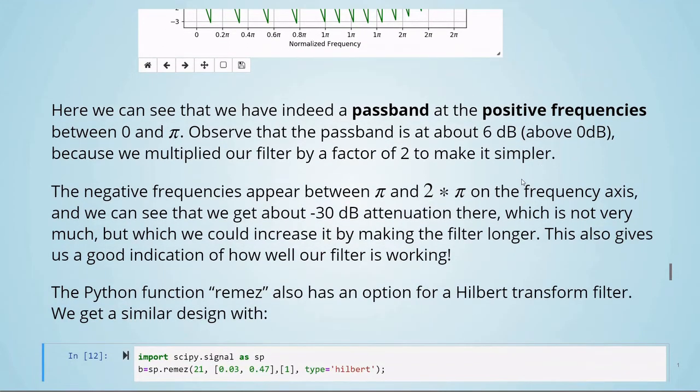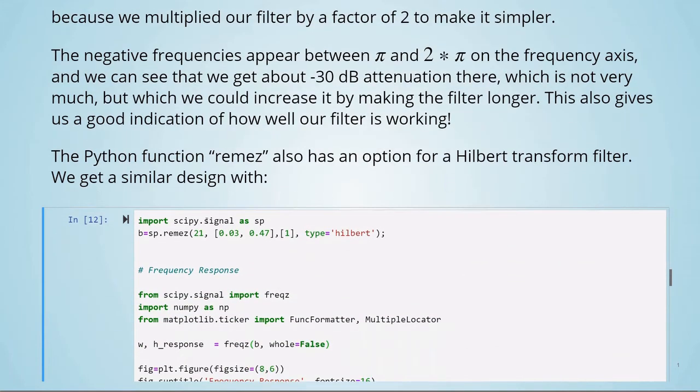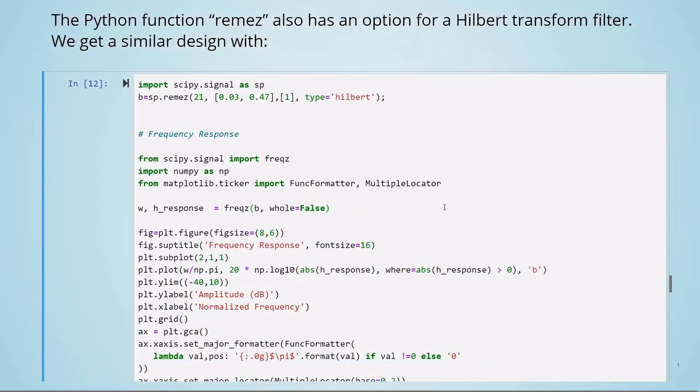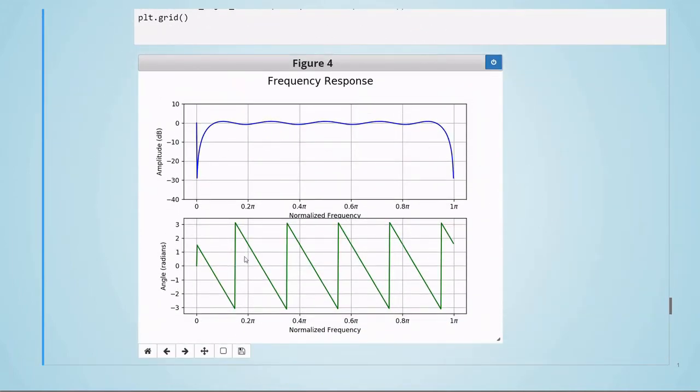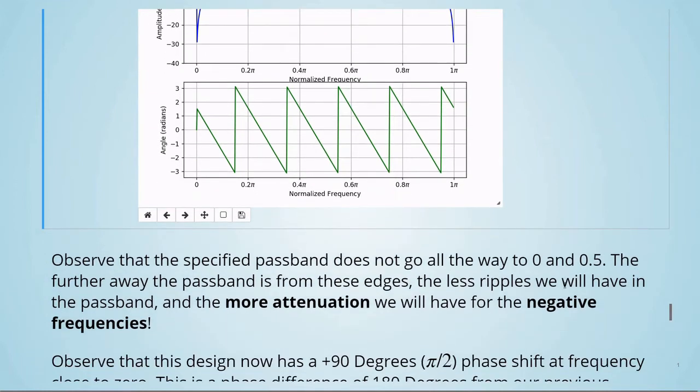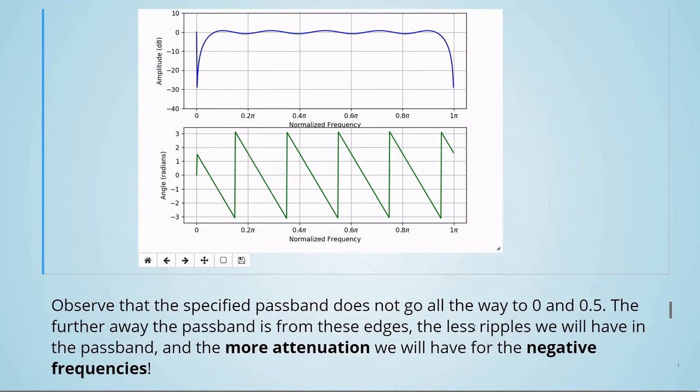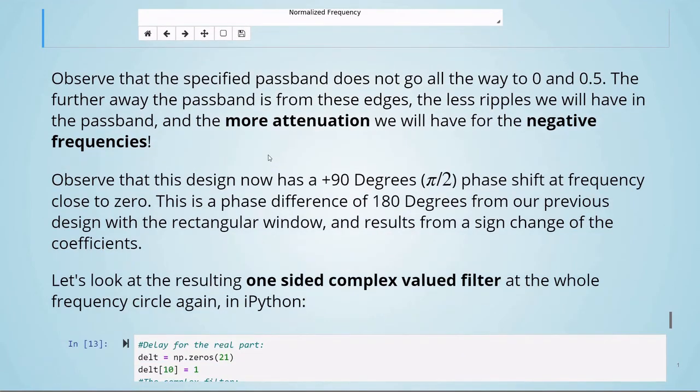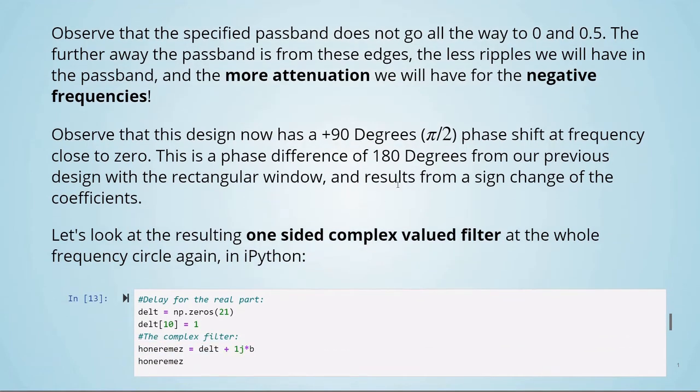The Python function remez also has an option for a Hilbert transform filter. We get a similar design using remez, and we set the type to Hilbert. The frequency response is shown here. Observe that the specified passband does not go all the way to 0 and 0.5. The further away the passband is from these edges, the less ripples we will have in the passband and the more attenuation we will have for the negative frequencies. Observe that this design now has a plus 90 degrees phase shift at frequency close to 0. This is a phase difference of 180 degrees from our previous design with the rectangular window and results from a sign change of the coefficients. Again, we can look at the resulting one-sided complex valued filter on the whole frequency circle again.